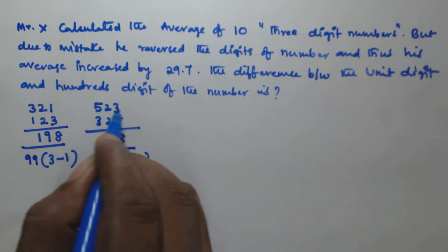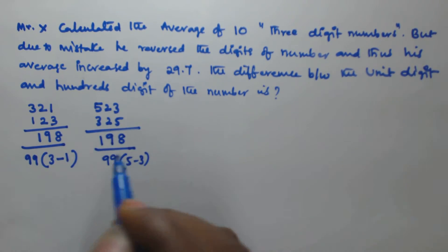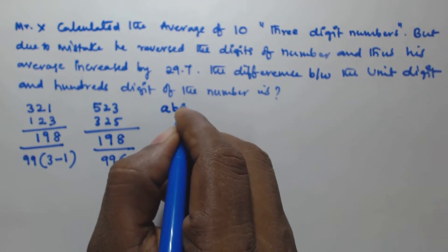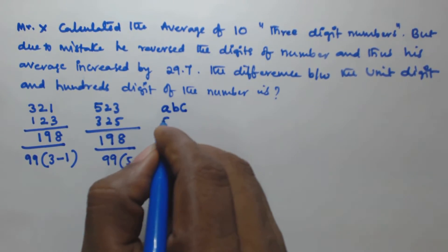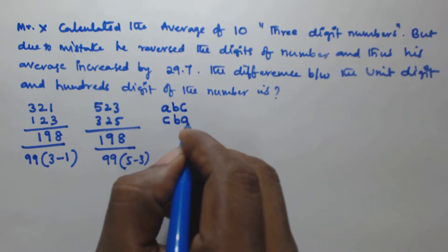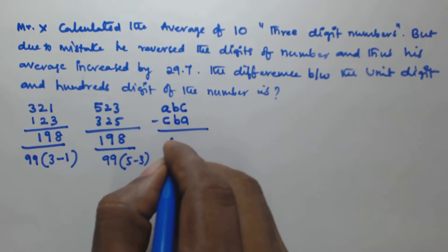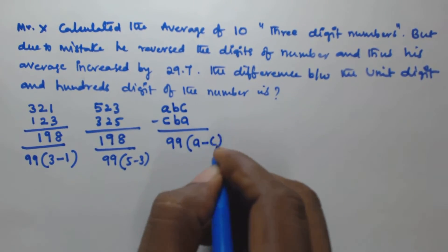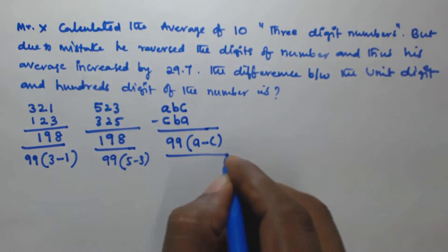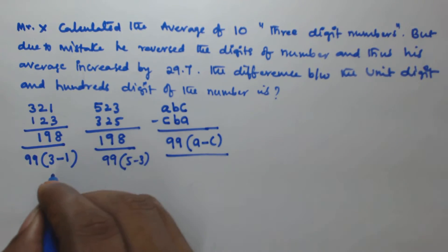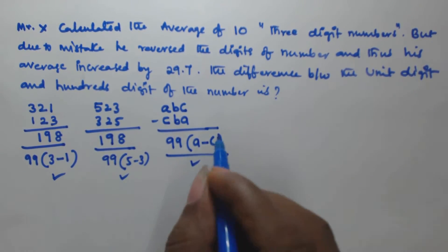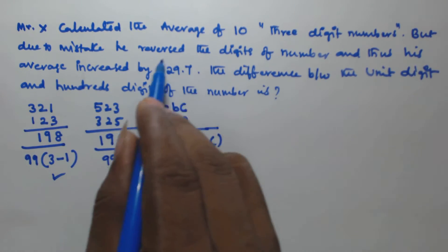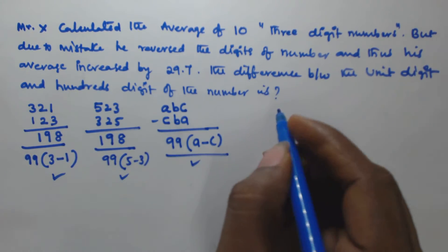In general, if a three-digit number is ABC and its reverse is CBA, then subtracting gives the generalized result: 99 × (A − C), where A is the hundred digit and C is the unit digit.